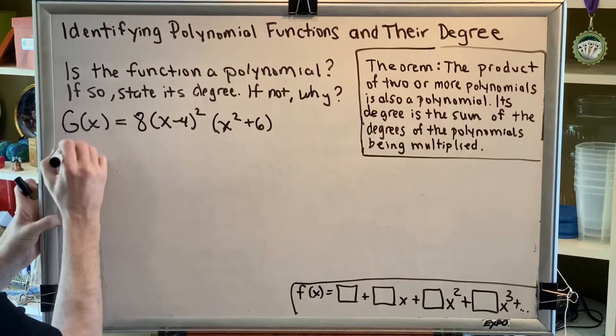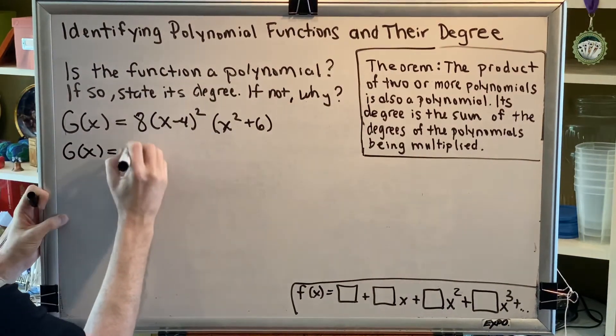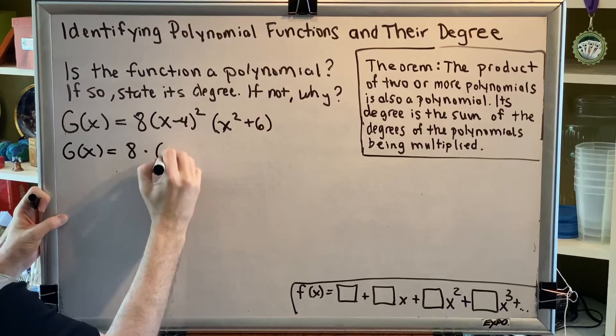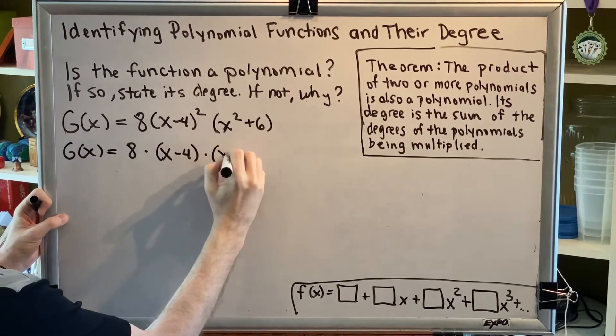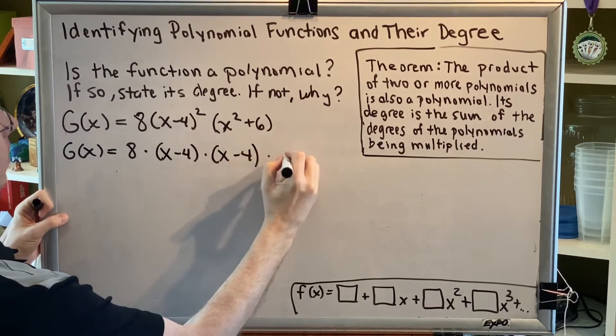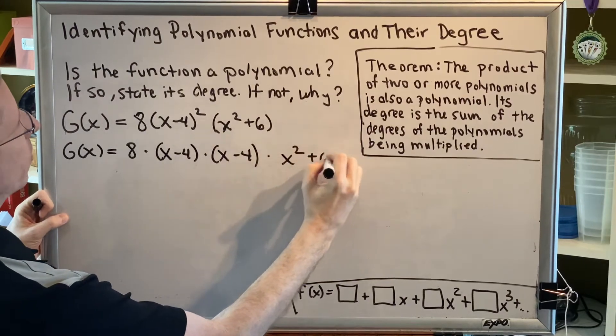So let's write it in that form. G of x equals 8 times the first x minus 4 times the second x minus 4 times x squared plus 6.